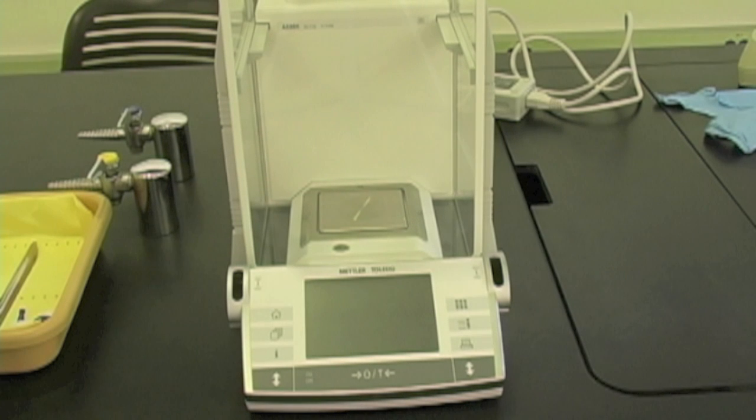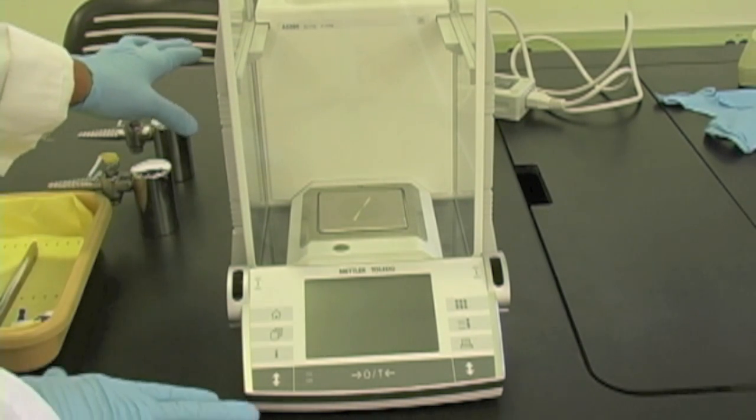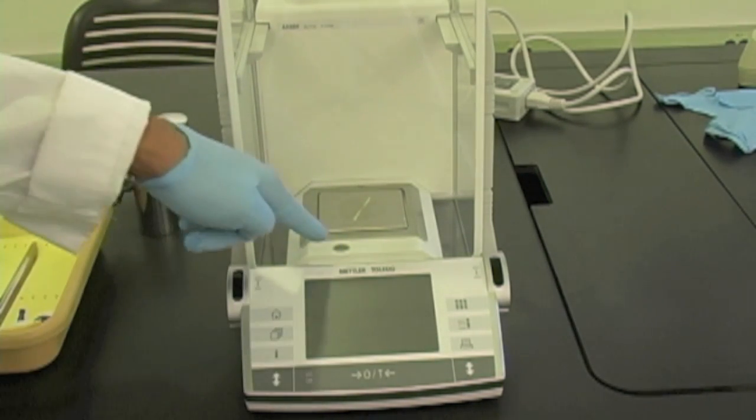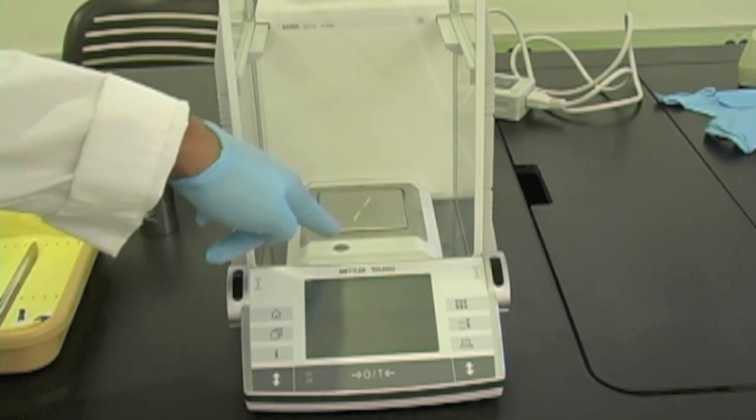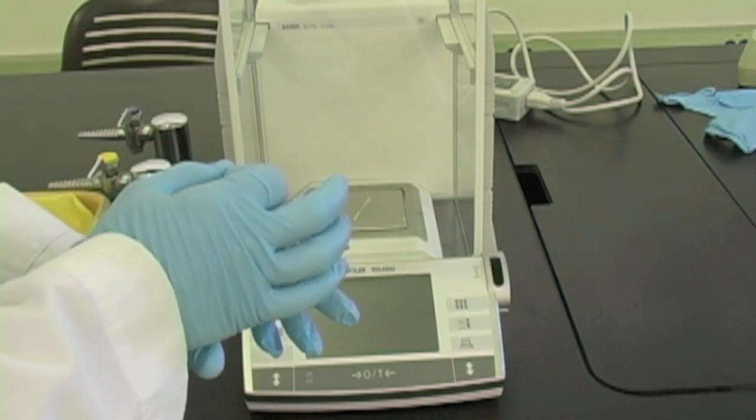The proper use of the Mettler Toledo balance. To begin using this balance, you have to first make sure that the scale is properly level. The way you do that is you look at this bubble right in the bottom of the pan and you make sure that the bubble is centered.